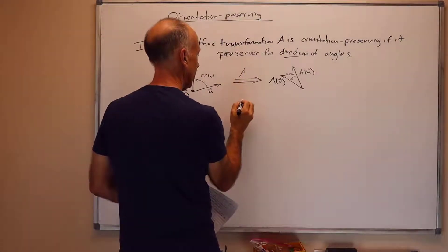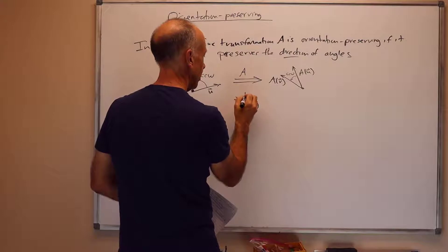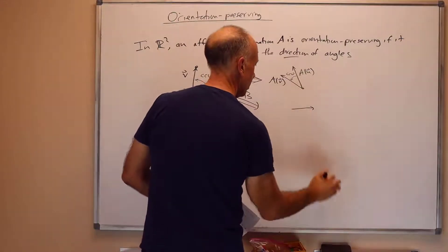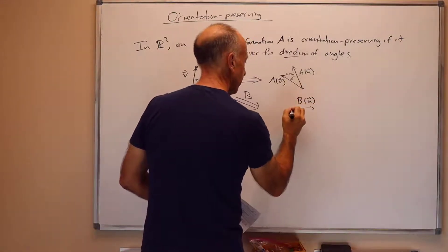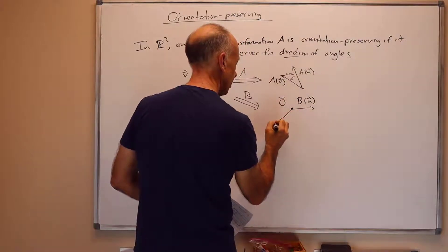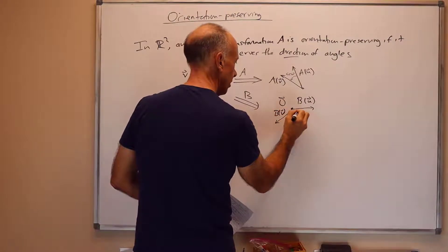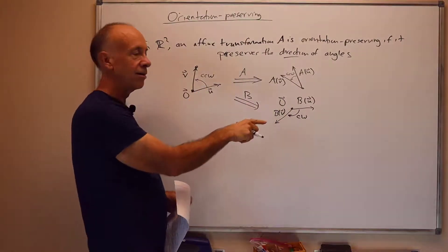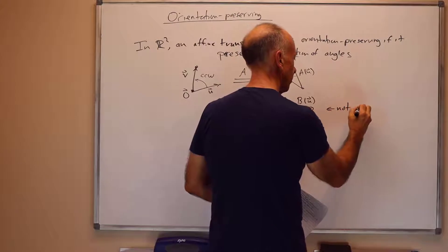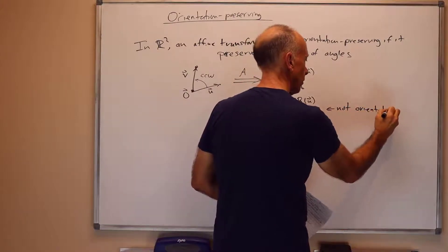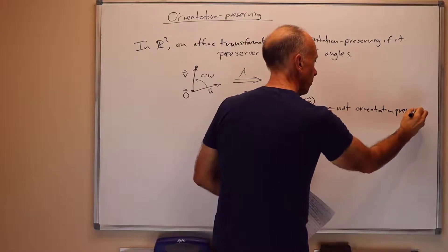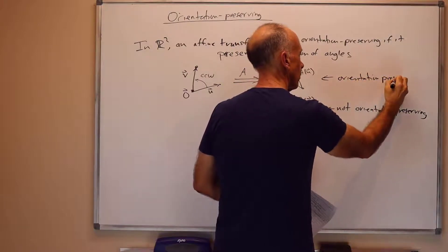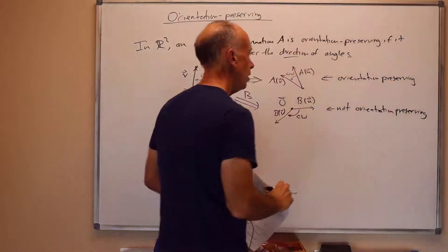On the other hand, if we had another mapping A, suppose if we had a different map, which I can call B, and if it say sent B of U was here, and say B of V was here, then this angle is clockwise instead of counterclockwise. So, it took a counterclockwise angle and turned into a clockwise angle. So, this would not be orientation-preserving. Whereas, this one was orientation-preserving. In particular, rotations are orientation-preserving but reflections are not.